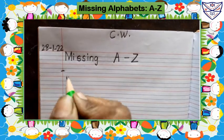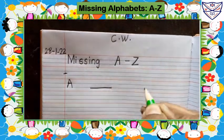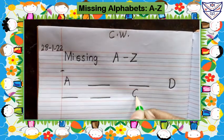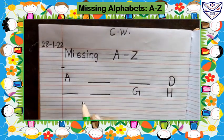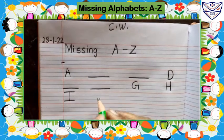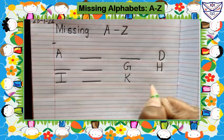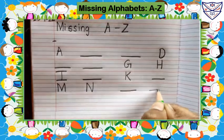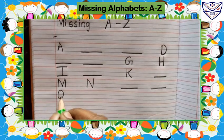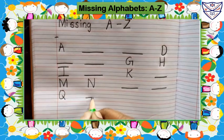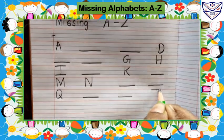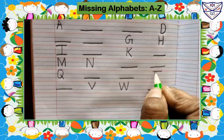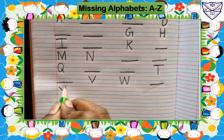Leave one line, start writing from here. Write A dash dash, G-H, I-K dash dash, M-N dash dash, Q dash dash, T-V, W dash dash, Y dash.